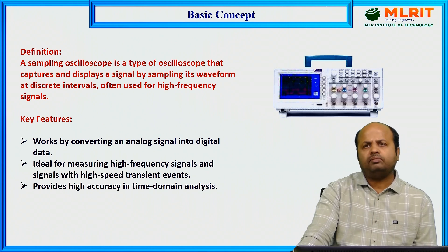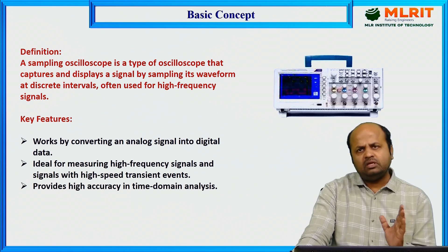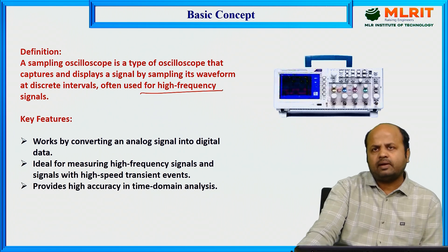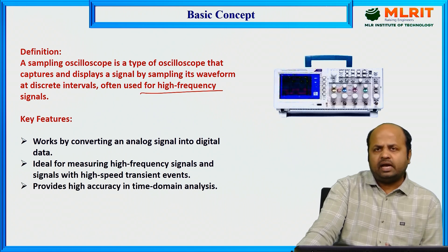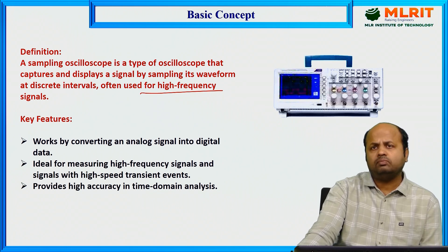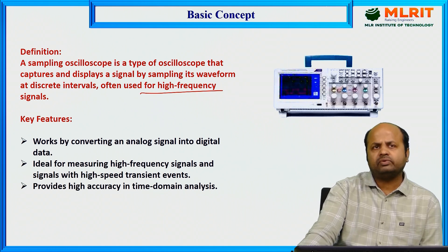What is a sampling oscilloscope? As we are already aware, oscilloscopes are used to display signal waveforms on the screen. One of the major features of a sampling oscilloscope is that it is widely used to capture high-frequency signals. Normal oscilloscopes can capture signals in the megahertz range, but sampling oscilloscopes can capture signals in the gigahertz range, which is widely used in the telecom industry.